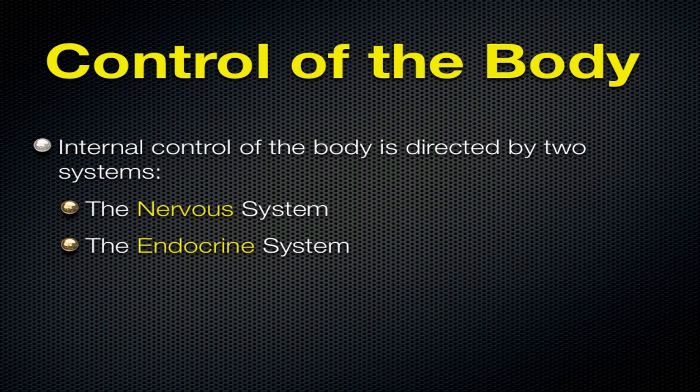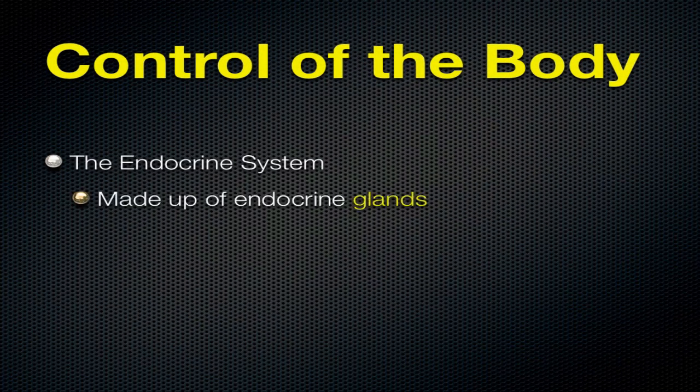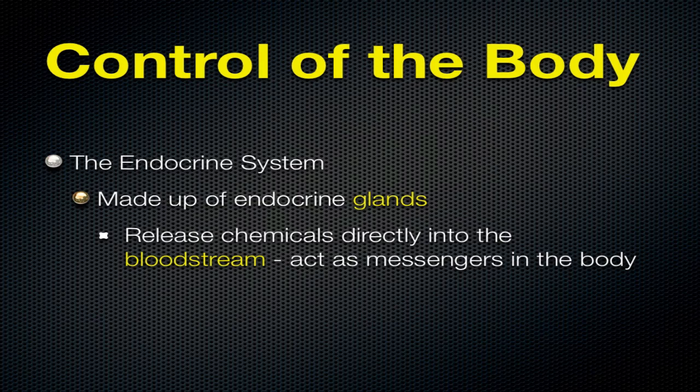We're not going to talk about the nervous system in this section. We're going to have an entire chapter that deals with that, chapter 36. But in this last section, we're going to talk specifically about the endocrine system. The endocrine system is made up of a bunch of endocrine glands. These glands are important because they release chemicals directly into the bloodstream, and these chemicals act as messengers throughout the body. These chemicals are called hormones.